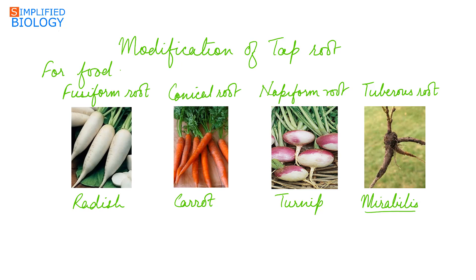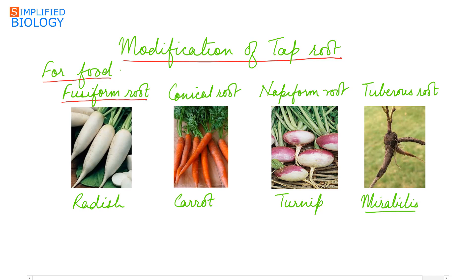Besides providing anchorage and absorption of water and minerals from the soil, roots also perform many other functions. First: modification of the tap root system for food storage. The primary root developing from the radicle swells up and stores food. The first type is the fusiform root. Fusiform roots are spindle-shaped — thick at the center and tapering on both sides. Best example: radish, that is Raphanus sativus.